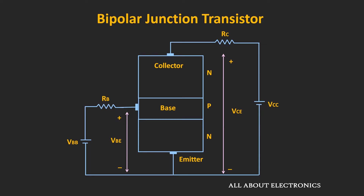Let's say there is one NPN transistor and it is biased in the forward active region. That means the base-emitter junction is forward biased, while the collector-base junction is reverse biased. Now as the base-emitter junction is forward biased, the depletion region between the base and the emitter will be very narrow.